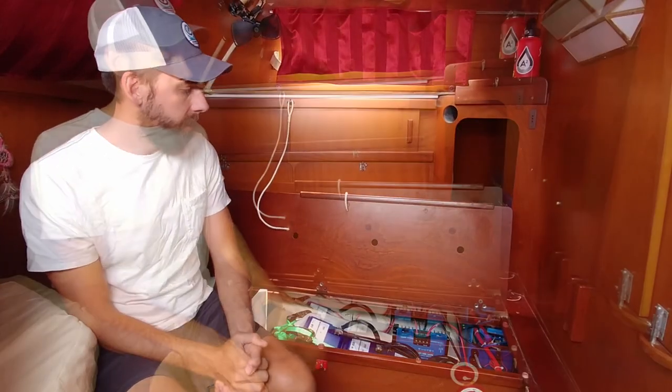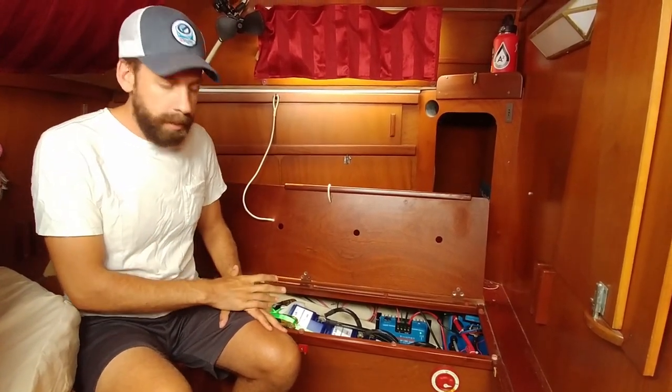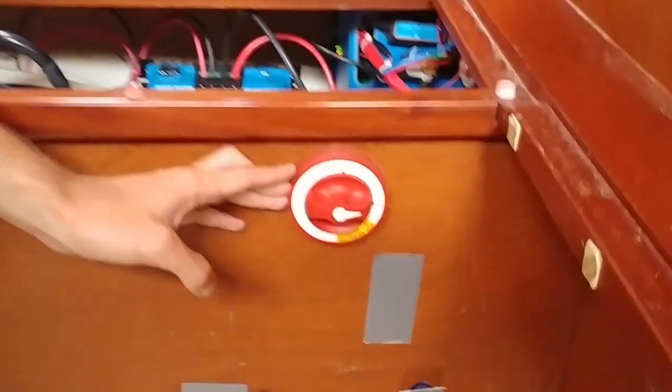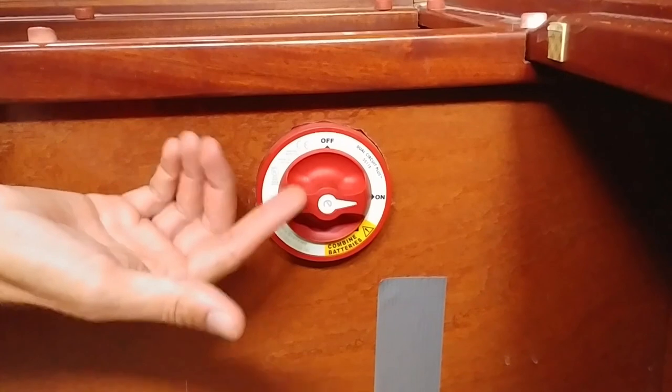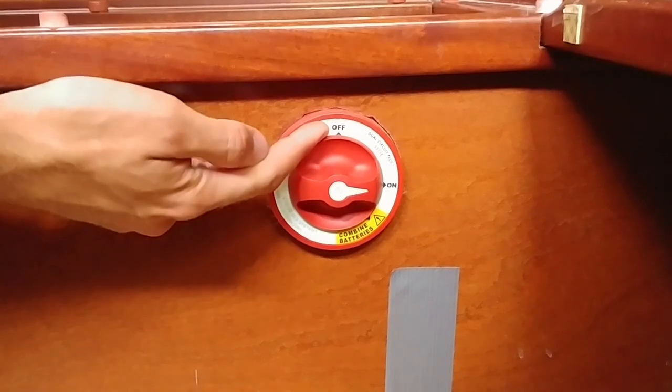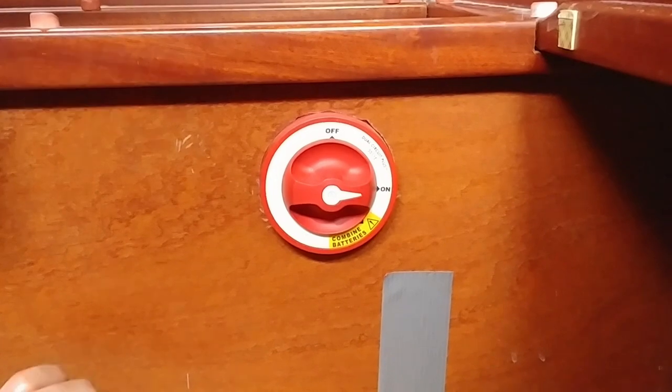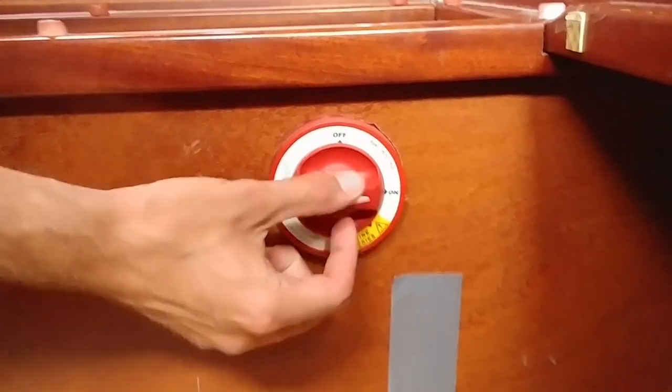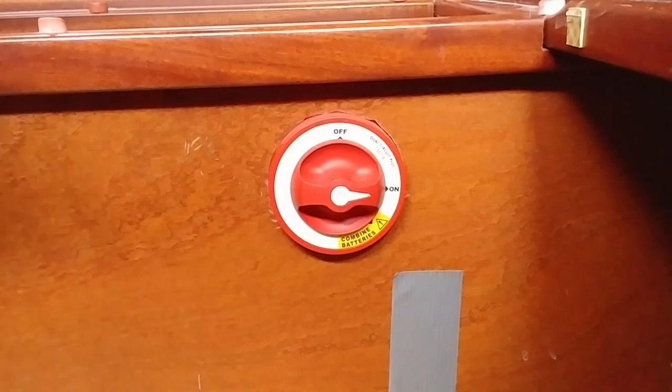So we have a switch here. This is a Blue Sea system switch. They make all kinds of different switches, but this was simple. We only have three positions: we have an off, which turns both our starter battery and our house bank off; or on, which turns both the starter battery and the house bank on; or let's say one of the banks is dead, most likely your starter battery, I can turn this to an emergency reserve combined mode that combines both battery packs all into one.